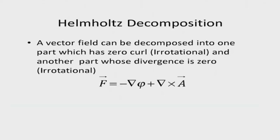I stated that F equals minus gradient of phi. We know that the curl of a gradient is zero. The second part uses the fact that the divergence of a curl is always equal to zero. Now, why is it called solenoidal? Some of these are very old nomenclature and you have to understand the history a little bit.